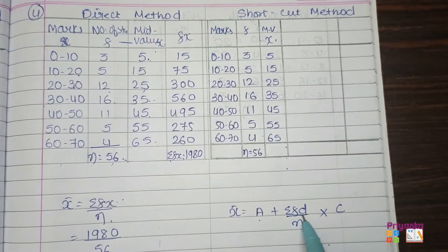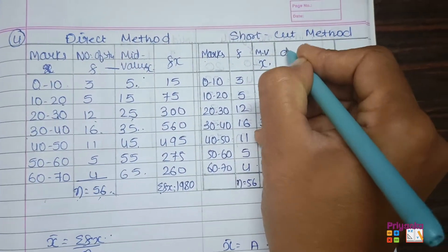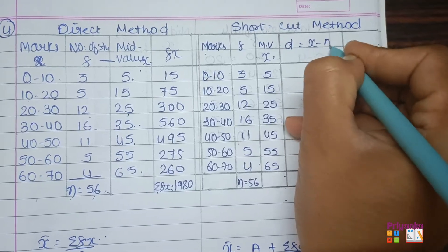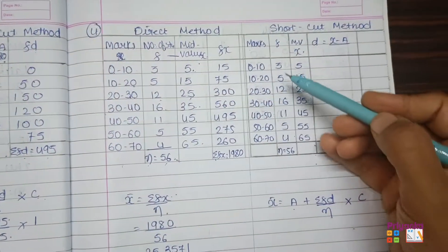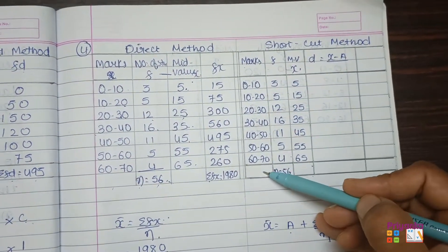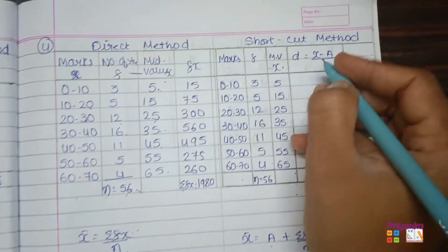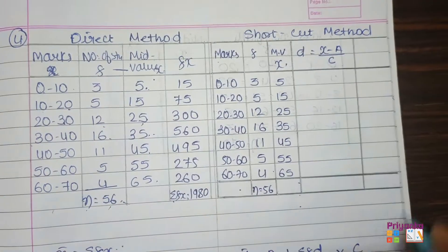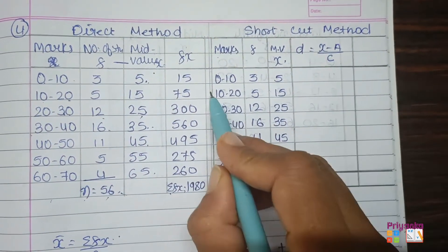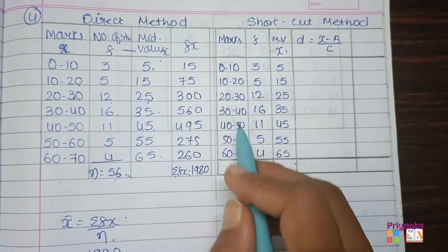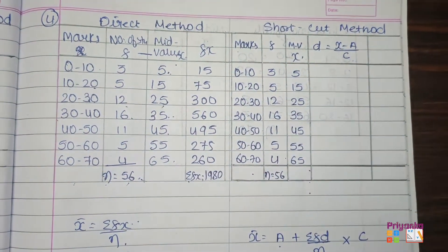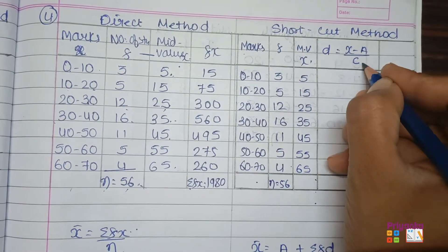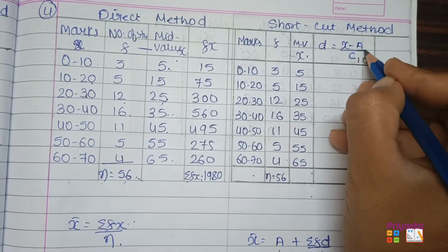Here we have d, which is found as: d = (x − assumed mean) ÷ c. The same approach we did before was for discrete data, but here we have continuous classes. When we have continuous classes, we divide by c, where c is simply the class length. The class length c = 10, and a is the assumed mean.